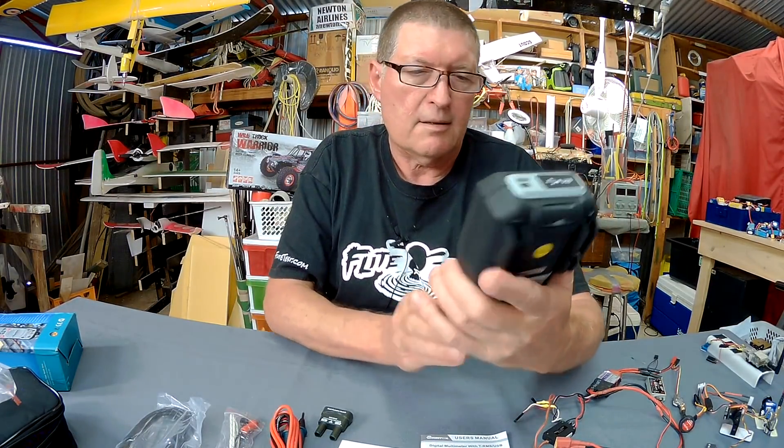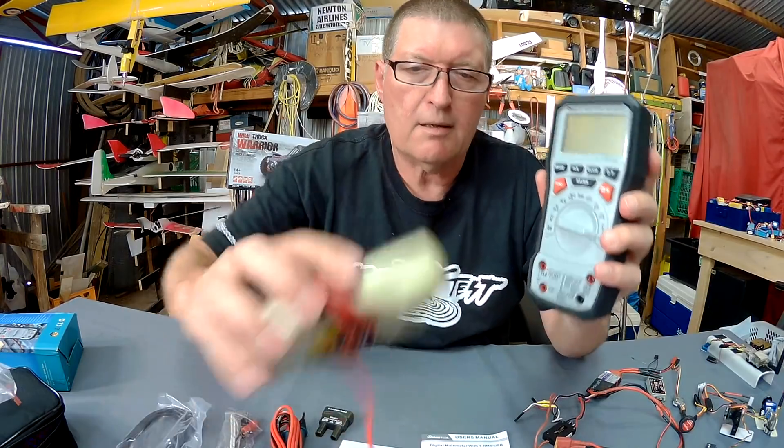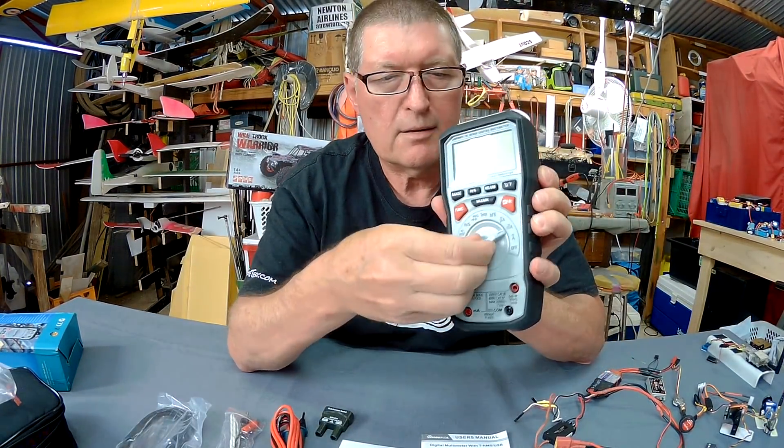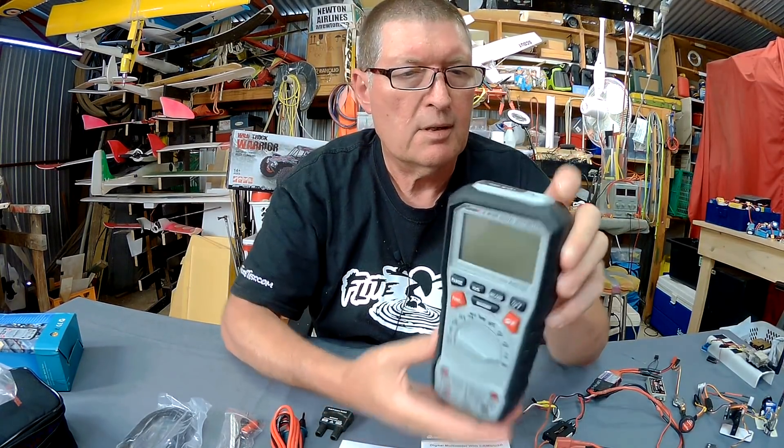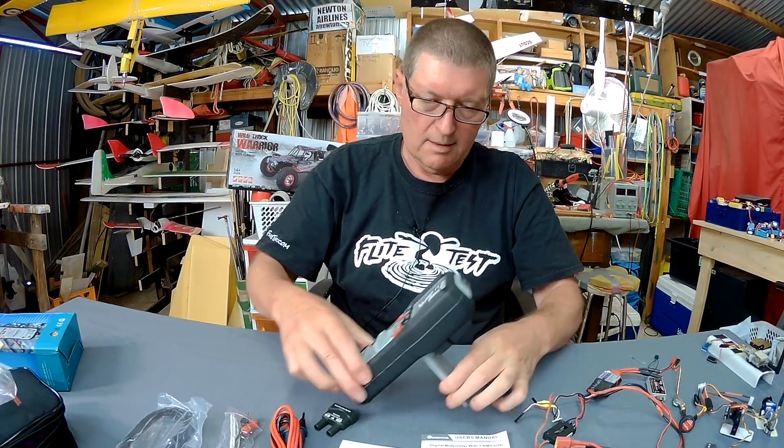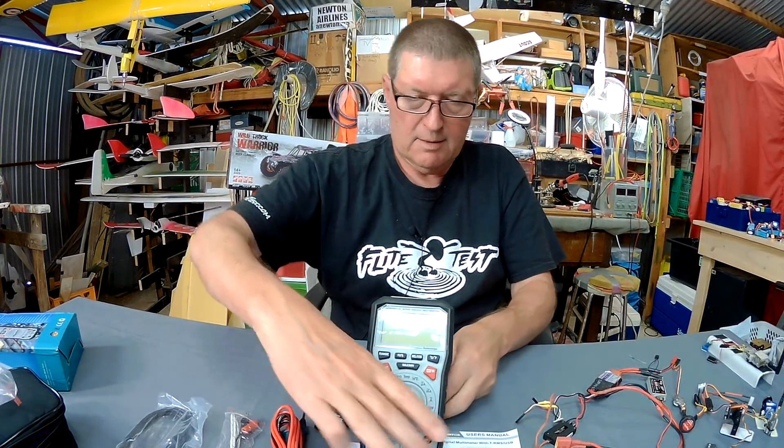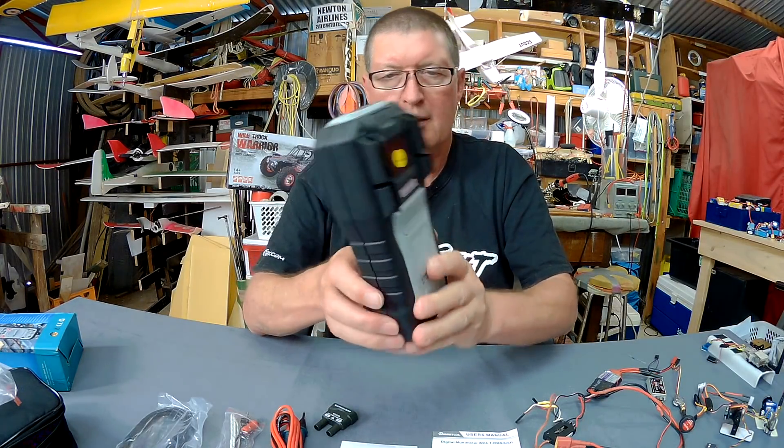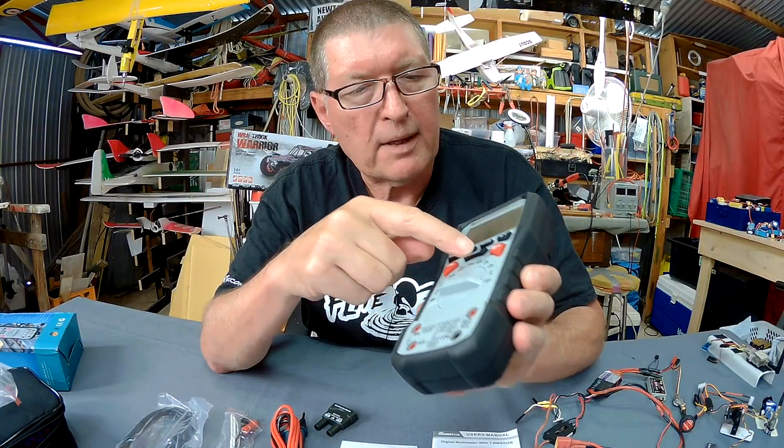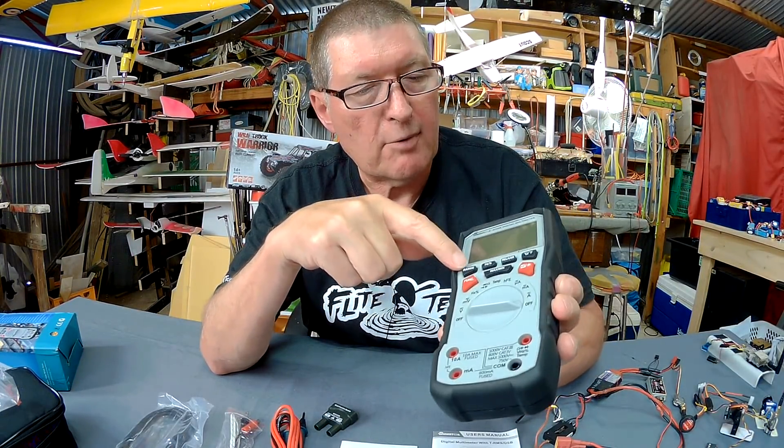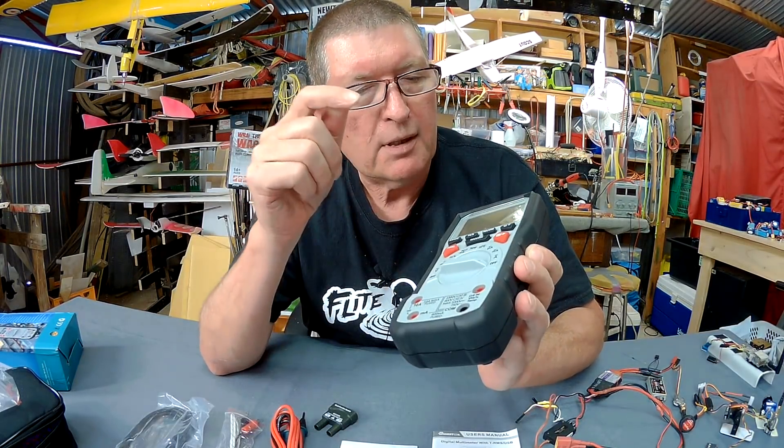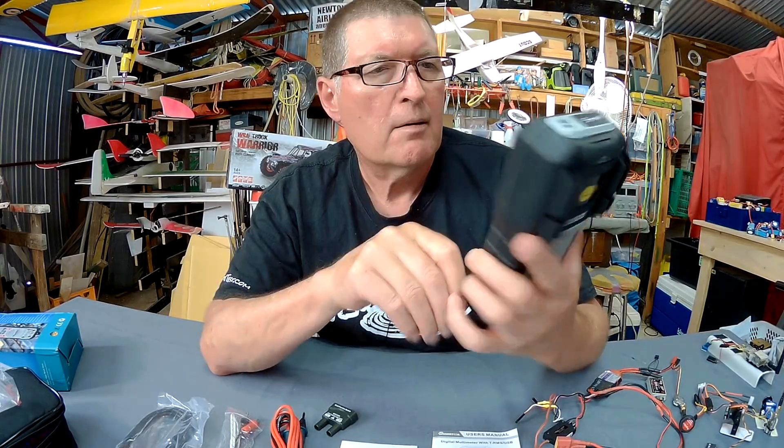Alright, now this is a nice big chunky compared to the little cheapy. Nice big screen. Nice positive selector switch. USB plug in the top there. It has a stand on it, so you can stand it up. That's very nice. Plug your test leads in down here. You have a function button, minimum maximum button, backlight and H, whatever that is. Range, frequency, USB and relative measurements, temperature, minimum maximum. All pretty straightforward.